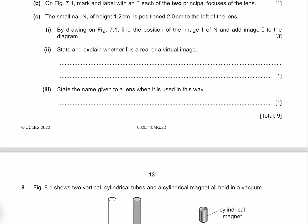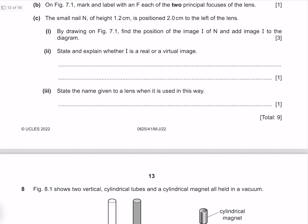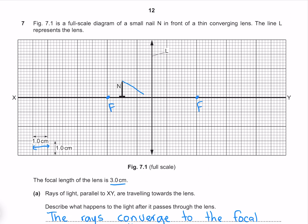The small nail N of height 1.2cm is positioned 2cm to the left of the lens. By drawing on figure 7.1, find the position of the image I of N, and add image I to the diagram. Our first ray goes straight through the middle. Our second ray goes parallel and then through the focal. As we can see, these two rays are diverging, meaning that we need to backtrace them, giving us our image around about here.